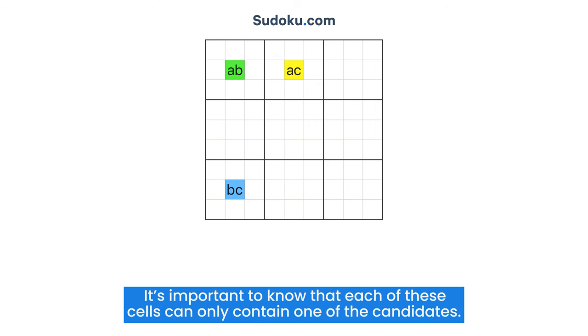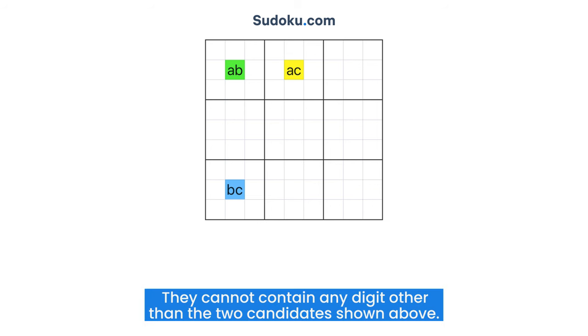It's important to know that each of these cells can only contain one of the candidates. They cannot contain any digit other than the two candidates shown above.